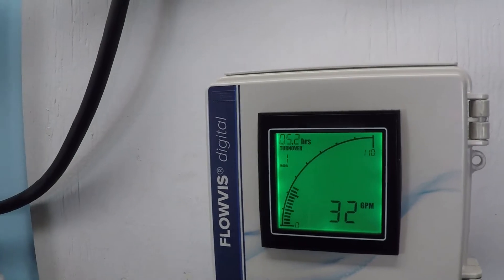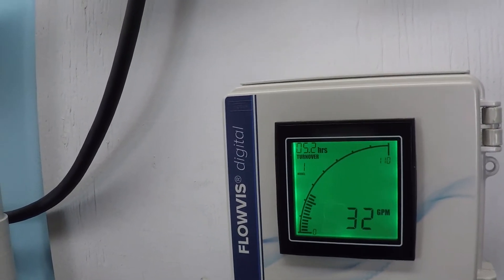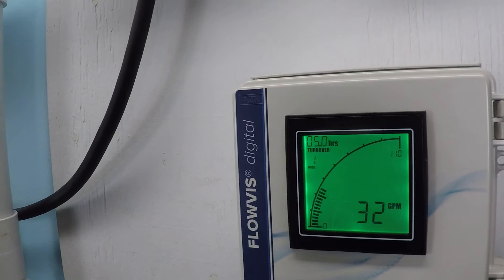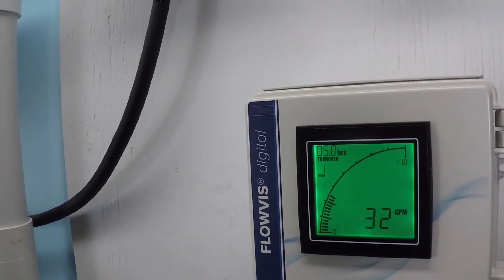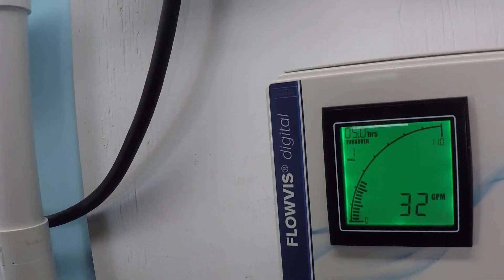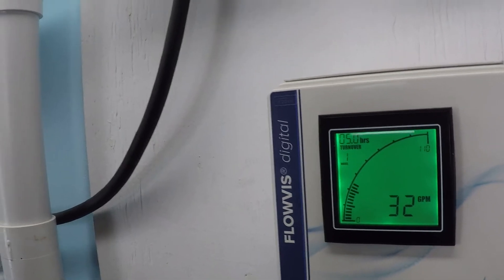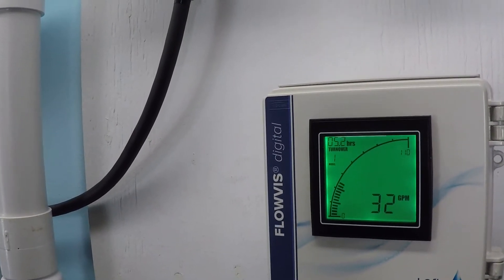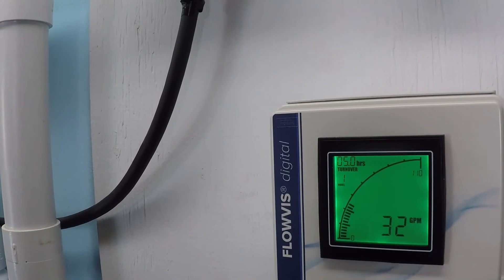You need to know how much water your pool is moving so you can start to calculate if you are moving enough water through your filtration system. You should be moving three times the volume of your pool through the filtration system every day.